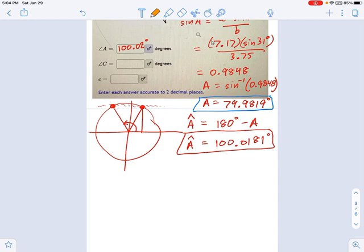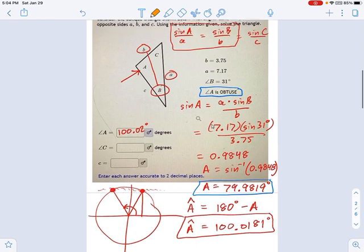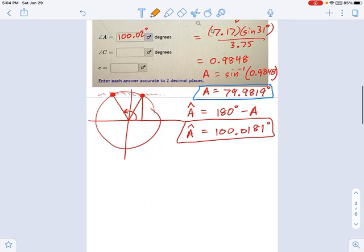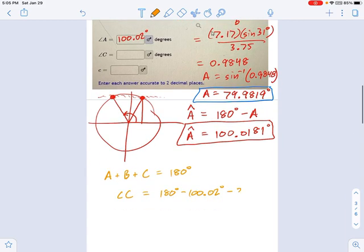I want to go for angle C next, because I can't get little c - I don't have anything about the Cs to work on. But I can get big angle C without even using the law of sines, just by remembering this: A plus B plus C equals 180 degrees. So that means angle C equals 180 degrees minus 100.02 degrees minus 31 degrees. That tells me that angle C is 48.98 degrees.